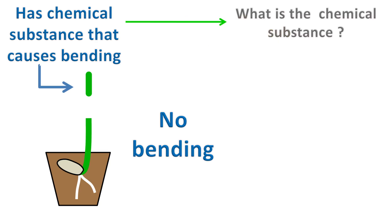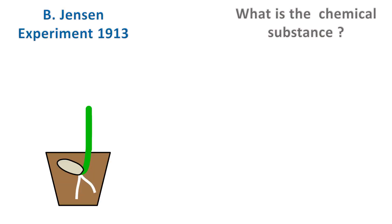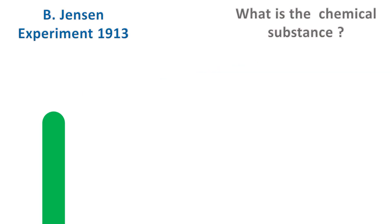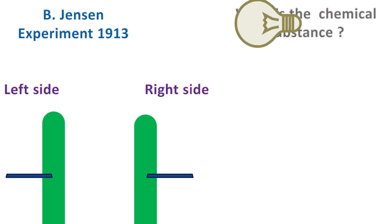In 1913, another scientist did an amazing experiment using oat coleoptile. He placed a thin impermeable barrier, like a blade, at the left side and the other at the right side of the tip. The light was then incident on the tip from the right side.